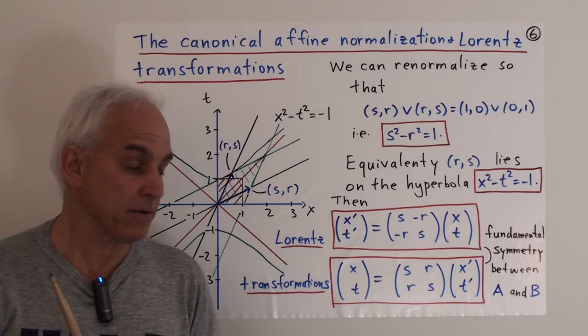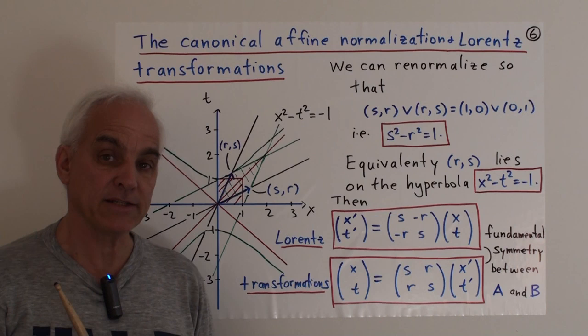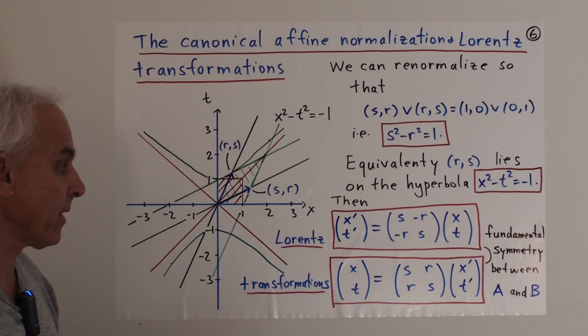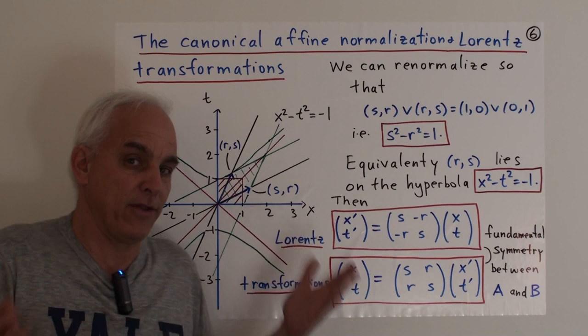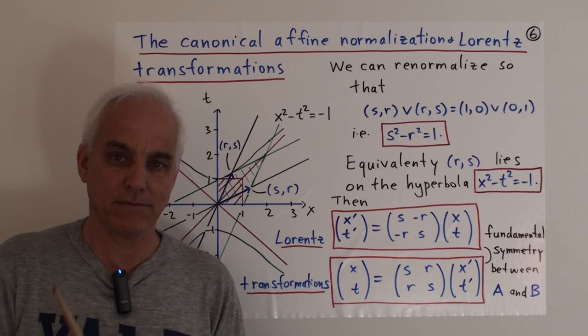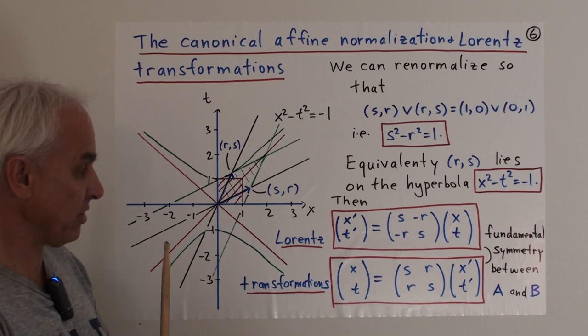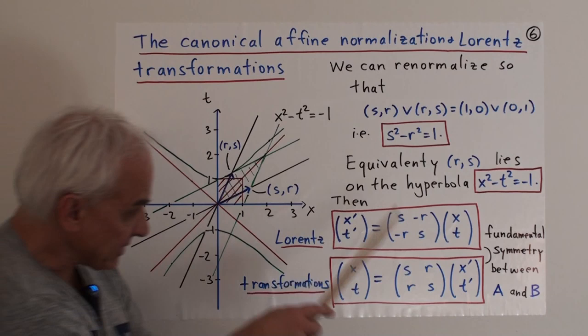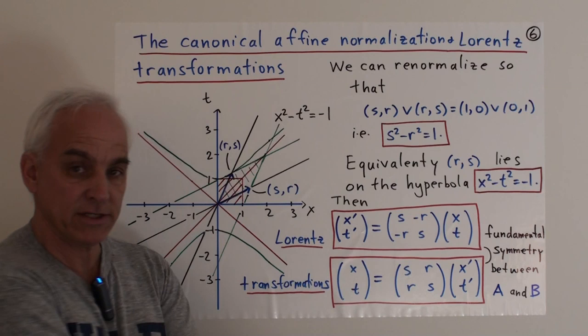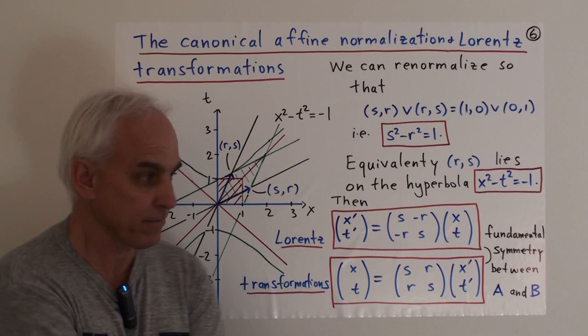Another way of saying this normalization is in terms of the vector RS: RS lies on the hyperbola x² - t² = -1. That's an equivalent way of saying this normalization condition, and that's convenient because we can picture this hyperbola in the x and t coordinates — it's this green hyperbola here. This is x² - t² = -1, and it has another branch down below. It's a rectangular hyperbola. This hyperbola plays an important role in Special Relativity — it's the analog of a circle in the geometry here.